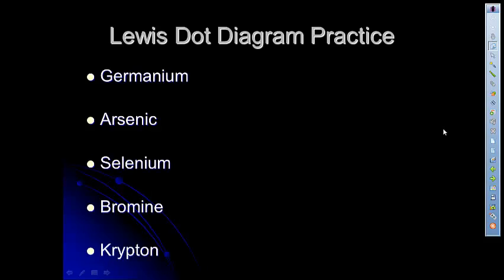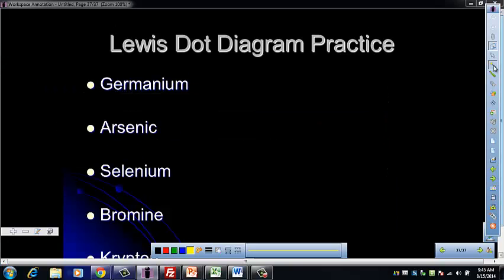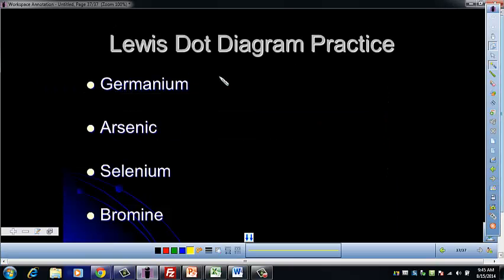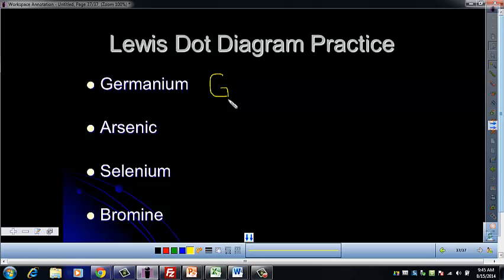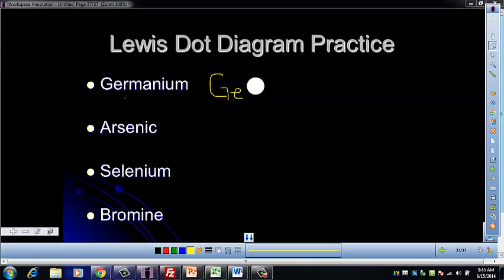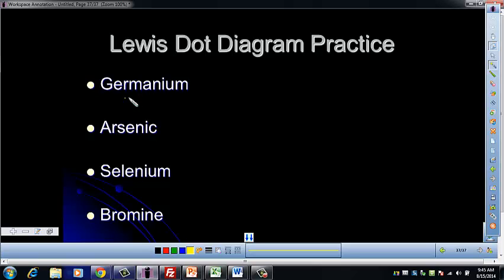Alright, so looking at that, you want to see what the number of valence electrons are for each of those. Alright, for germanium, germanium has 3, I'm sorry, 4 valence electrons. Okay, so look to see how many valence electrons germanium has. You should see that it has 4.